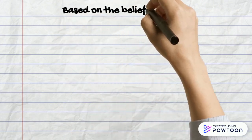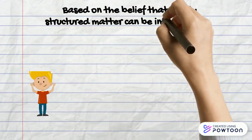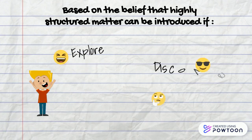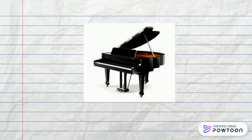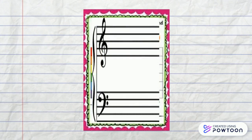The Carabocone method is based on the belief that highly structured subject matter can be introduced to a child if it can be translated into an environment that the child can explore, discover, and assimilate as he did his original environment as an infant. The structured environment includes a piano and large drawings of the grand staff on the floor, or the large tabletop, and on plastic wall charts.